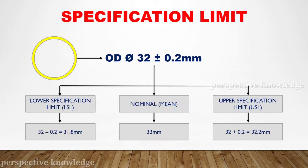LSL and USL. There is a ring — the outer diameter is 32mm, with tolerance 32 plus or minus 0.2mm. So 32 minus 0.2 equals 31.8mm — that is the lower specification limit, abbreviated LSL. And 32 plus 0.2 equals 32.2mm — that is the upper specification limit, abbreviated USL.